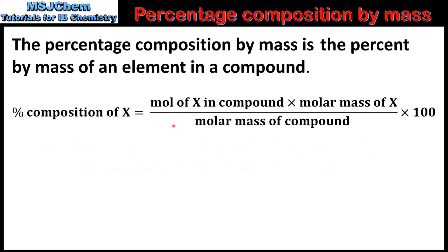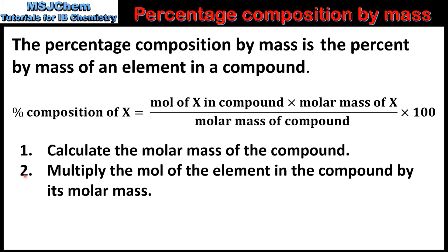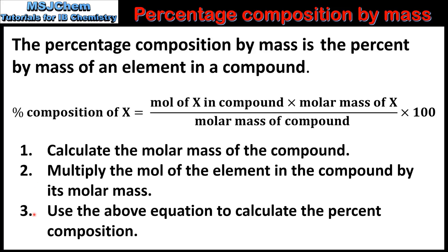Before we look at some examples we'll go over how to calculate the percent composition. The first step is to calculate the molar mass of the compound. The second step is to multiply the moles of the element in the compound by its molar mass. And the third step is to use the above equation to calculate the percent composition.